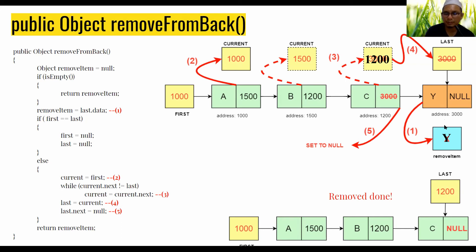The first step is to get the data of the node to be removed. We access last.data to get the value — for example Y — and store it into removeItem. Next, check whether first equals last; if so, there is only one node in the list.